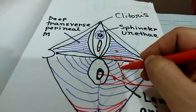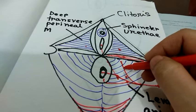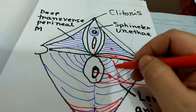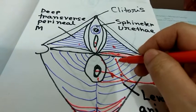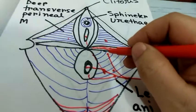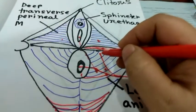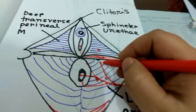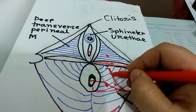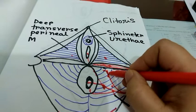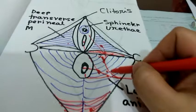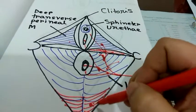The next branch is the perineal nerve, which is also a mixed nerve. Its sensory branch is called the posterior scrotal branch in males or the posterior labial branch in females, providing sensory supply to the posterior part of the scrotum or labia majora. Its muscular branch gives motor supply to all muscles of the perineum except the coccygeus.